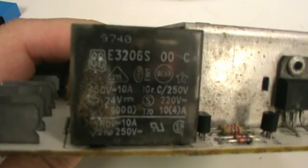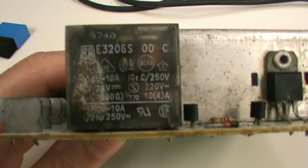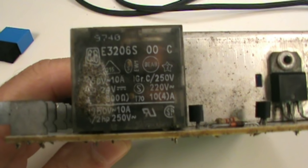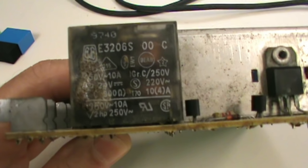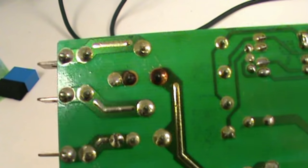Looking at the relay you can see the part number is the E3206S. The stock one is a 24 volt relay rated at 10 amps on the contacts. If you look at the connections on this first one you can see they've overheated.